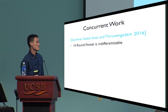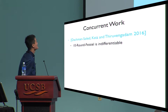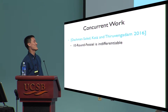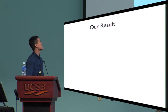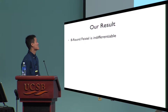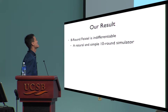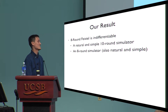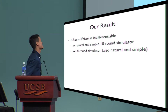Concurrent and independent of our work, Dachman-Soled, Katz, and Thiruvengadam proved that 10-round Feistel is indifferentiable, appearing at this year's Eurocrypt. Our result is that 8-round Feistel is indifferentiable. We first give a natural and simple 10-round simulator, and from this simulator we obtain an 8-round simulator — which is also natural and simple, well, not that simple actually.